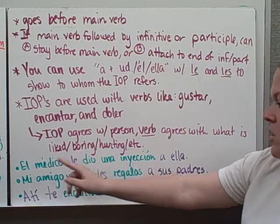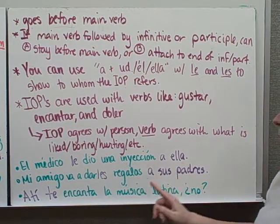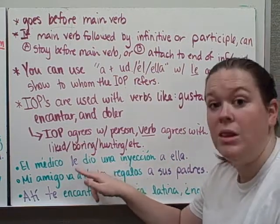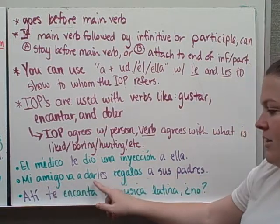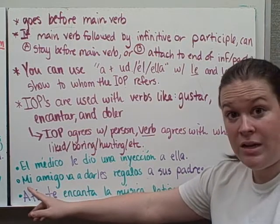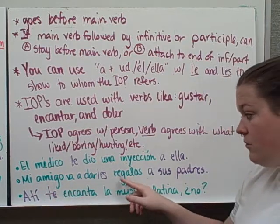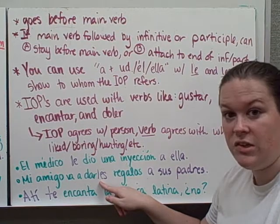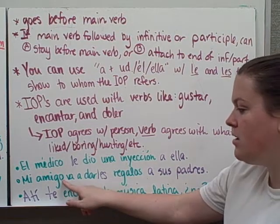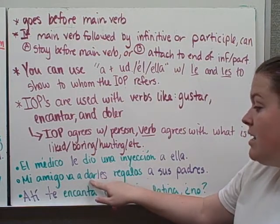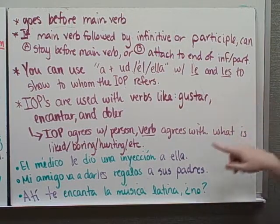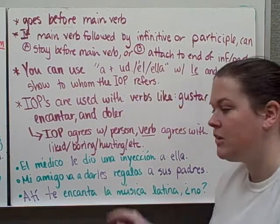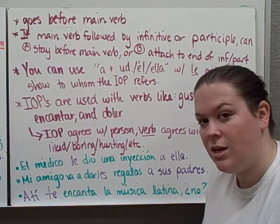Here are a couple examples. El médico le dio una inyección a ella — the doctor gave an injection to her, so we put le before the main verb: le dio. Mi amigo va a darles regalos a sus padres — my friend is going to give gifts to his parents. Who is he giving them to? To them — that's why les is there. You could put les va a dar, or attach it to the infinitive: darles. An infinitive is a verb that has not been conjugated.